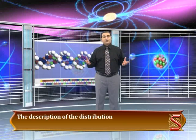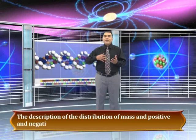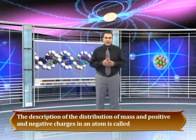Each element has different atoms. Matter as a whole is electrically neutral. Hence, it contains equal number of positive and negative charges in the atom. The description of the distribution of the mass and positive and negative charges in an atom is called an atomic model.